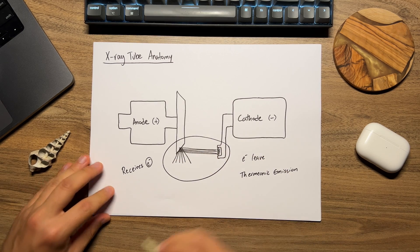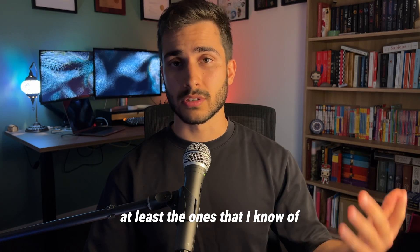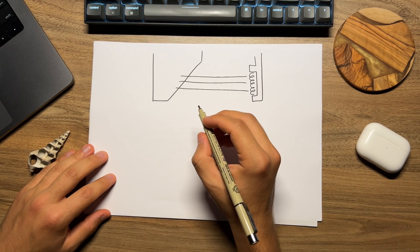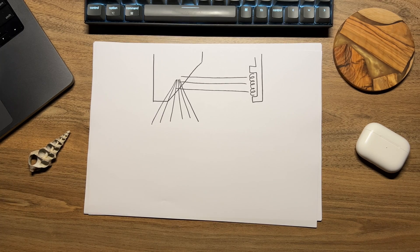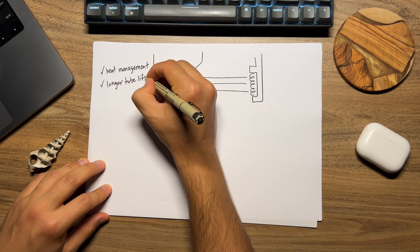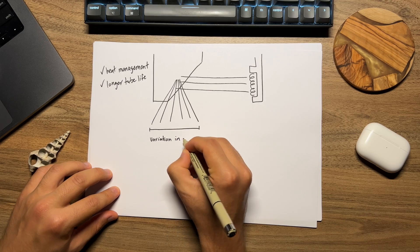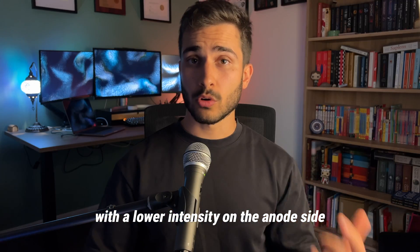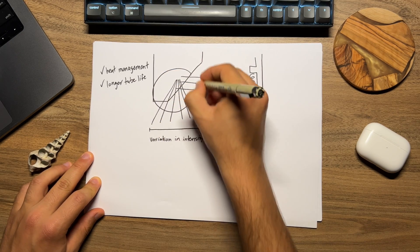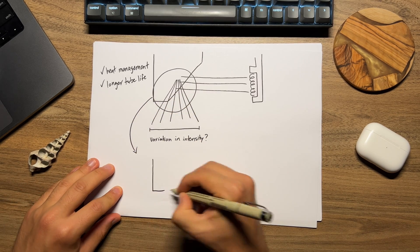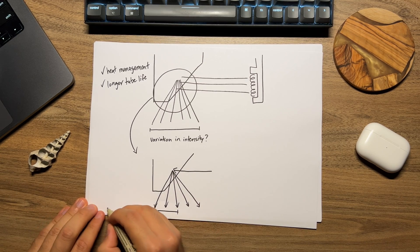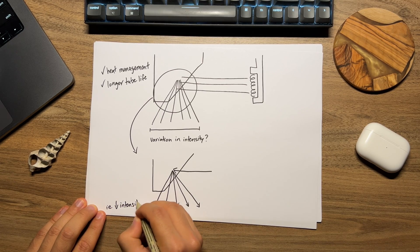The anode heel effect is a consequence of the geometry of the anode. In most x-ray tubes, the anode is angled relative to the beam's path, so it doesn't just bounce back. This angulation is required to allow for better and more efficient heat management, which prolongs the tube's life. However, because of the geometry of the beam as it hits the anode, there's a variation in x-ray intensity across the beam — with lower intensity on the anode side, the heel, and higher intensity on the cathode side. This intensity variation is due to the absorption and attenuation of x-rays in the thicker part of the anode material, so more of those electrons are absorbed on the anode side than on the cathode side.